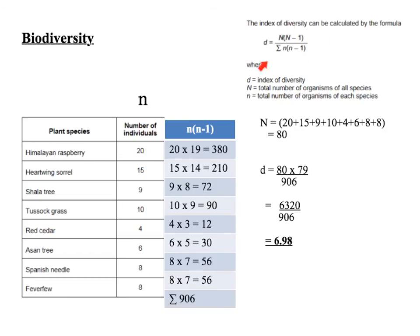Biodiversity. Here's the formula for biodiversity — it's worth learning, but in the vast majority of past paper questions you've been given the formula. You could be expected to define what each of the letters represent, so it's worth learning those as well. You're usually given a different array of species and the number of individuals of each species. I tell my students to extend the table — add another column labelled n (little n), the number of organisms of each species.